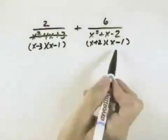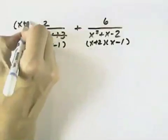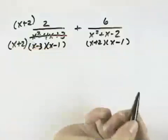We can see they both have the factor of x minus 1, but this fraction is missing the factor of x plus 2. So we'll multiply the numerator and the denominator by x plus 2.